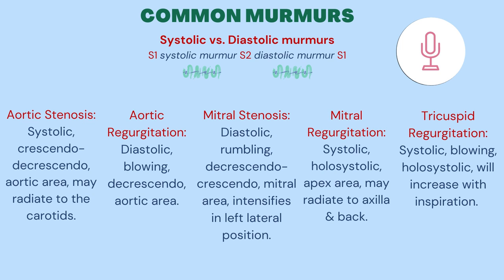Now let's talk about some common murmurs. You'll need to practice differentiating between systolic and diastolic murmurs. During the cardiac cycle, systolic murmurs are heard best between the S1 and S2, and diastolic murmurs are heard just after the S2 and before the S1.